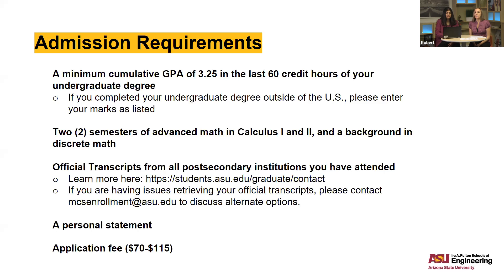Our minimum GPA requirement is a 3.25 on the U.S. scale, measured in the last 60 hours or last two years of your undergraduate degree. If your degree was completed outside the U.S., please enter your GPA as it appears on your transcript — we evaluate it based on the country where the education took place. ASU is a big choice for international students, so we have abundant data and reference points to evaluate those transcripts.